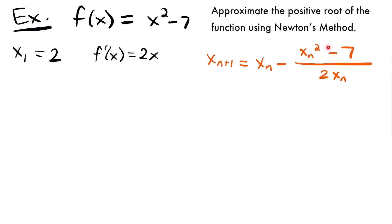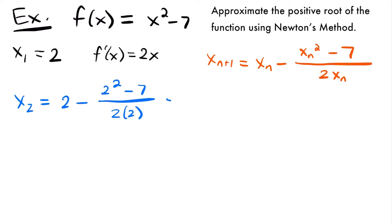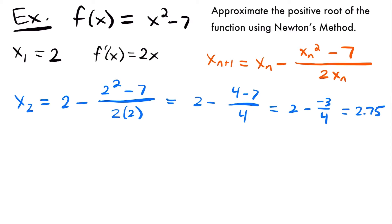Now with our formula and our first guess of x sub 1 equals 2, let's find x sub 2, which will be a better approximation. x sub 2 equals 2 minus (2 squared minus 7) divided by (2 times 2). Simplifying: 2 minus (4 minus 7) divided by 4, which is 2 minus negative 3 fourths, which equals 2 plus 3 fourths. In decimal form, that's approximately 2.75. This is our first approximation from the first iteration of Newton's method.